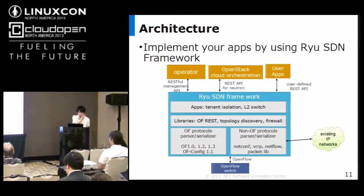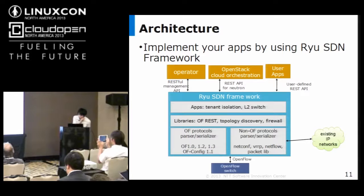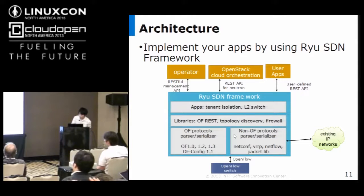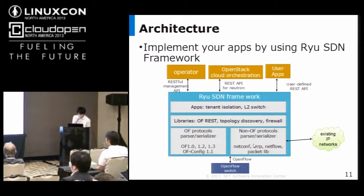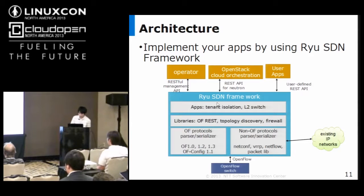This shows the Ryu architecture overview. Ryu supports not only OpenFlow protocol but also existing network protocols such as NetConf, VRRP, NetFlow, and so on. So we can control existing network devices by using Ryu. Ryu already supports some useful applications and libraries. You can use these applications and libraries with the internal Python API or external API like REST API. For example, the network operator can easily get controller and switch state via REST API. And Ryu communicates with OpenStack via REST API for Neutron.